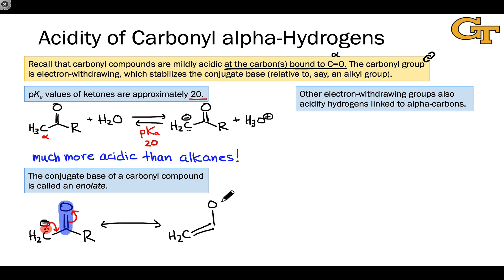The resulting resonance form has negative charge on oxygen and a carbon-carbon double bond. What this resonance form helps us see is that negative charge is shared between oxygen and carbon. And in fact, the resonance form with negative charge on oxygen is likely more important than the C minus resonance form, because in this structure on the right, negative charge is residing on a more electronegative atom.